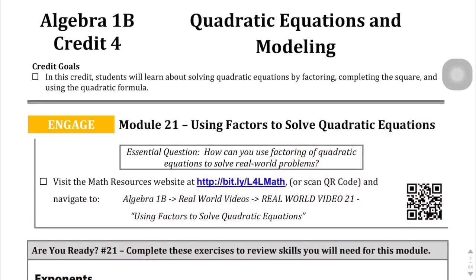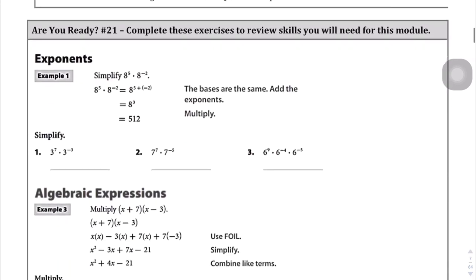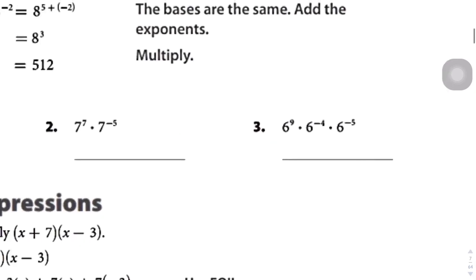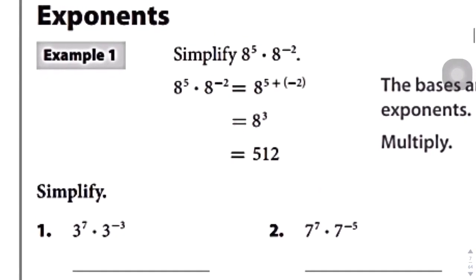Welcome to Algebra 1B Credit 4. In this credit we're going to be talking about quadratic equations and modeling. Specifically, the big focus on this credit is actually on factoring quadratic equations to find solutions. If this is your first time even attempting algebra, that means nothing to you. So let's just jump in to the credit. We're going to start by talking about some of the prerequisite skills that we need before we can actually start factoring quadratic equations.